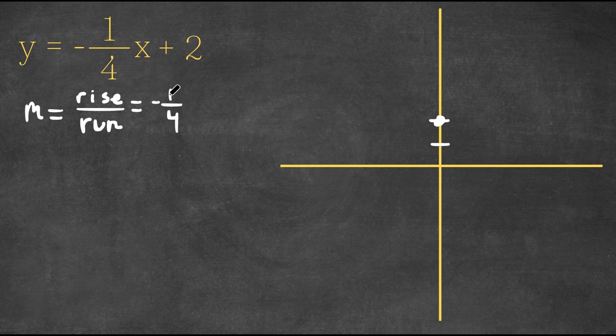So if our rise is negative, that means we go down by one. So because it's negative one, we're going down by one, and because our run is positive, we're going to go to the right by that amount. So we're going to go to the right by four. So one, two, three, four. So we go down one and one, two, three, four to the left. So that's where our next point is going to be.